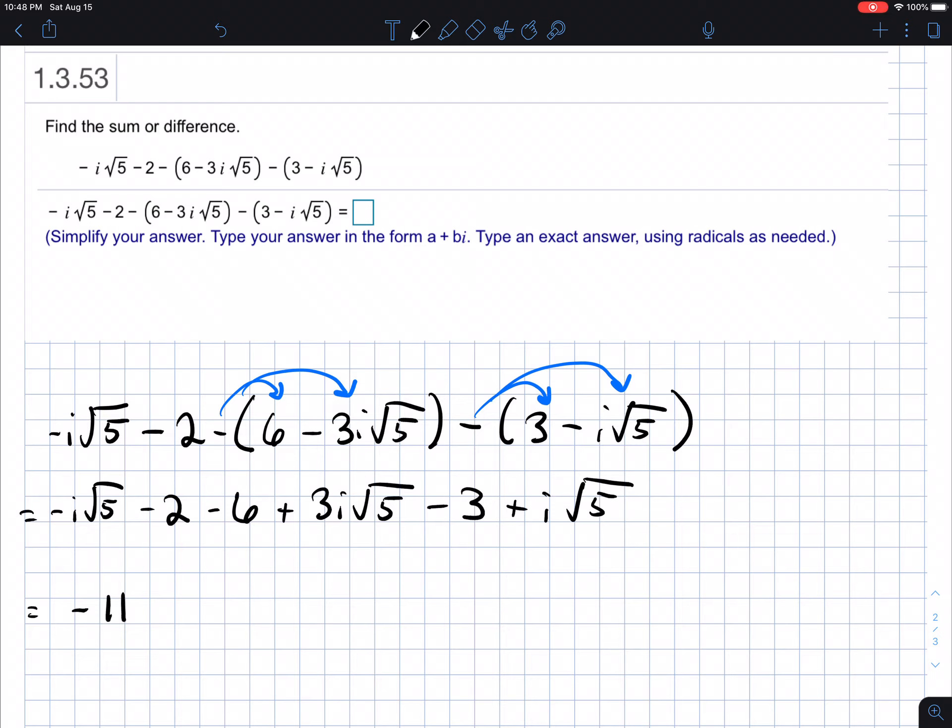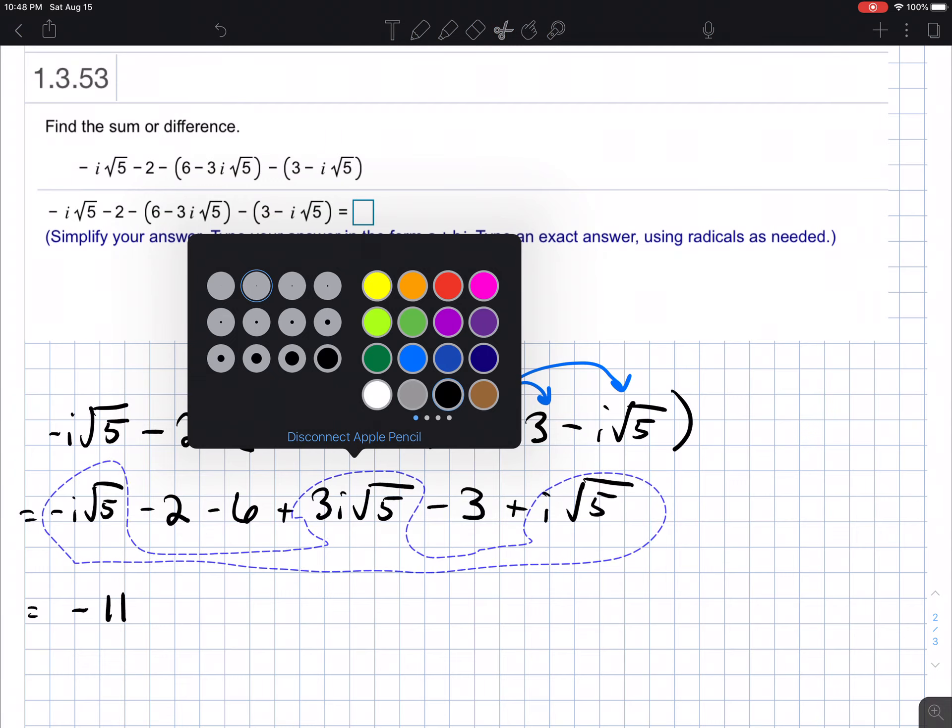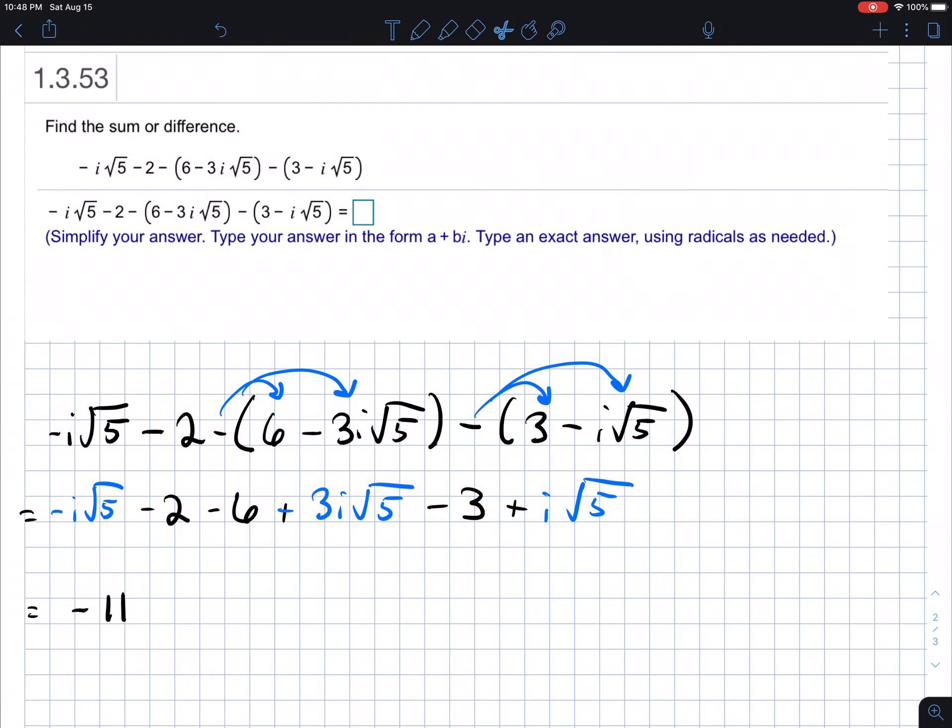Let's see. So we have I root five. Okay. So let's put these other like terms side by side. So we have this guy, this guy, and this guy. All right. I'll do style. We'll do that in blue. So they're all like terms. Let's just be a little consistent.